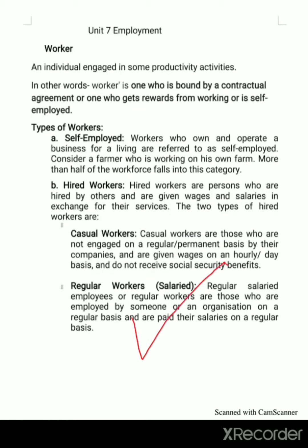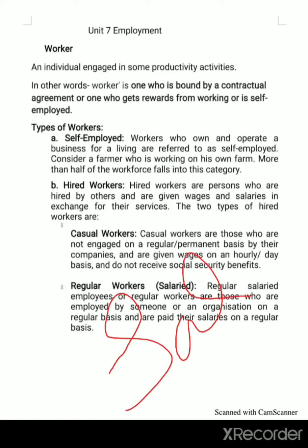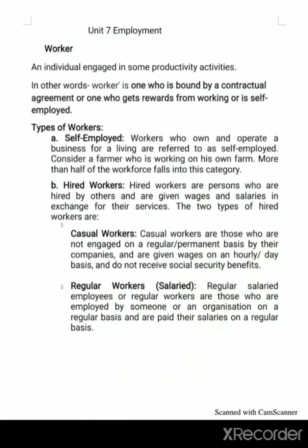Regular workers or salaried workers are those who are employed by someone or an organization on a regular basis and are paid salaries on a regular basis. Along with wages, they are paid salaries. They are permanent in nature.